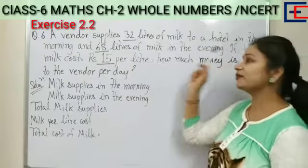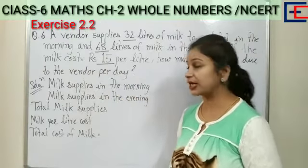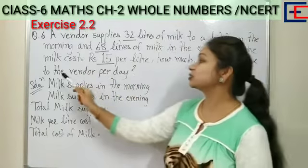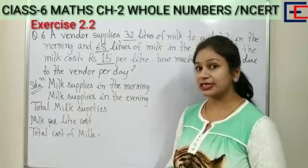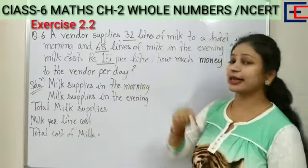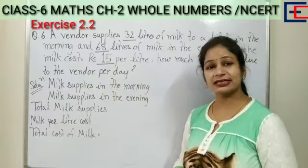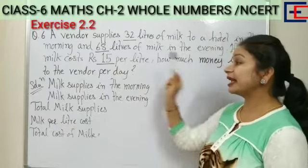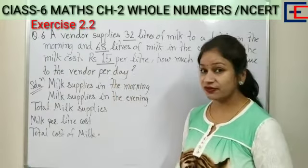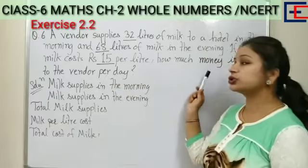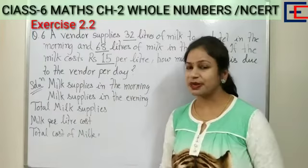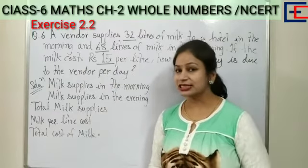If the milk costs rupees 15 per liter, how much money is due to the vendor per day? The vendor's morning supply is 32 liters and evening supply is 68 liters. The milk costs rupees 15 per liter. We need to find the total cost per day. Simple, first we will write the supplies.